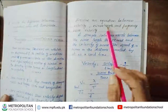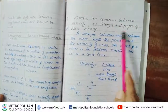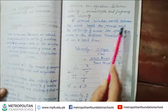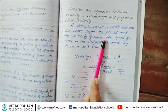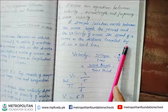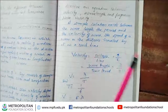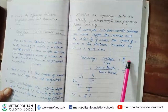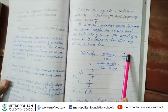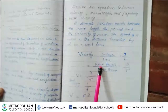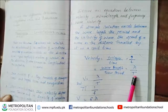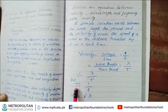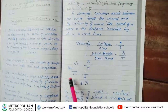The next question is: derive the equation between velocity, wavelength and frequency. A simple relationship exists between wavelength, time period, and the velocity of a wave. The speed of a wave is the distance traveled by it in unit time. In a wave, the distance covered in one time period is equal to one wavelength. Velocity formula is v = s/t, where s is distance and t is time. Here, s becomes wavelength (λ) and t becomes time period (T), so v = λ/T.